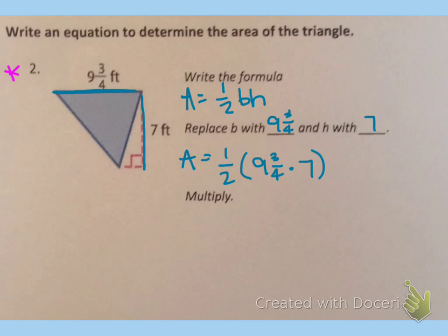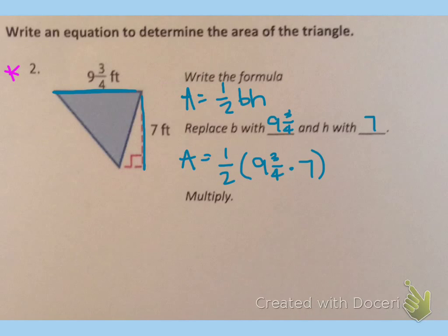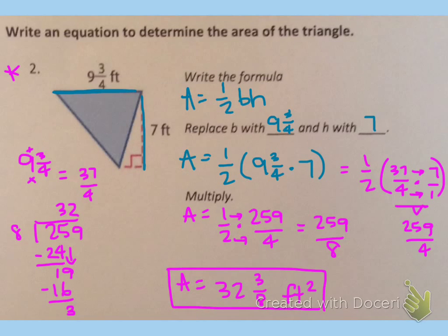And we can multiply to solve. I'm going to ask you to finish this problem on your own. Remember that we cannot keep the nine and three-fourths as a mixed number to multiply — we have to convert it to an improper fraction first. Go ahead and pause the video to solve, and then press play to check once you are confident in your answer. As we solved, we found that the area of this triangle is thirty-two and three-eighths feet squared.